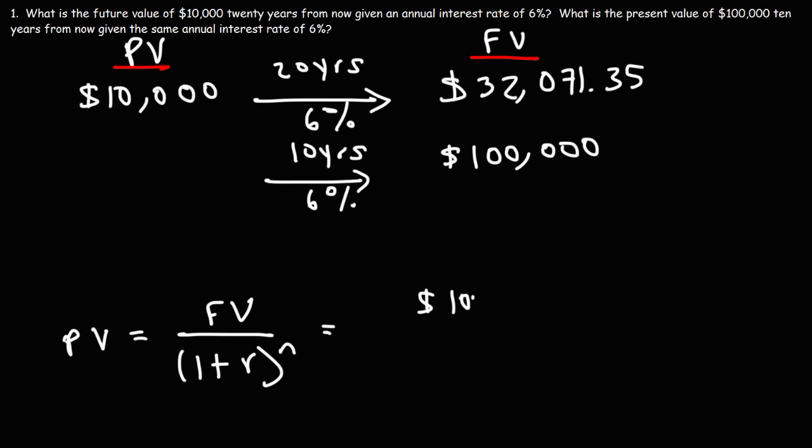So the future value is $100,000. r is still 0.06, so 1 plus 0.06, that's 1.06. And n is 10. So 100,000 divided by 1.06 raised to the 10th power gives us a present value of $55,839.48.